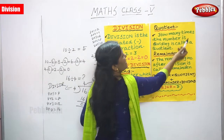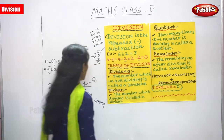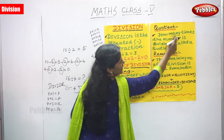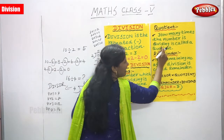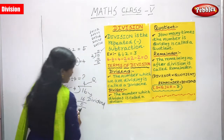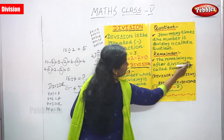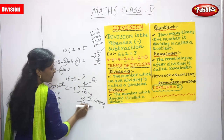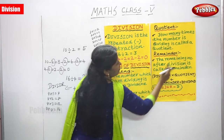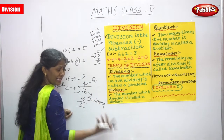Quotient — how many times the number is dividing is called a quotient. How many times does it go in the 4 times table? 4 times. That is the quotient. And the final term is remainder. The remaining number after division is called the remainder. In this sum we get only 0 as the remainder.